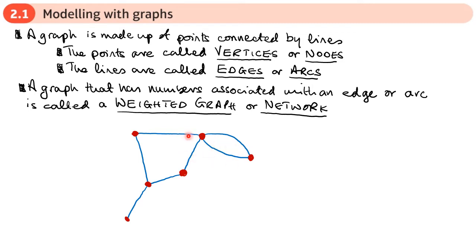Now, if I add numbers to these edges, this now becomes a weighted graph or a network. And typically, what we would have on a graph is each one of these nodes might be labeled, not numbered. We put a letter on there so we can identify which points we're talking about.